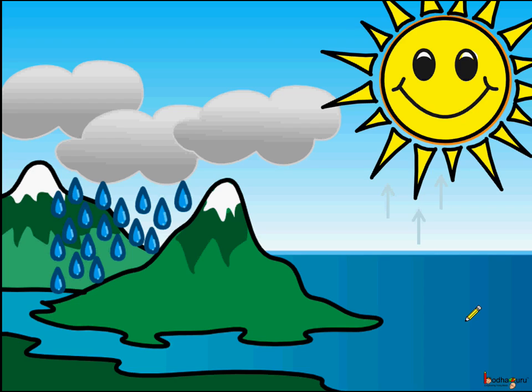Then it cools and forms small water droplets. These water droplets form clouds. And inside the cloud, what happens? The smaller water droplets join to form bigger water droplets.